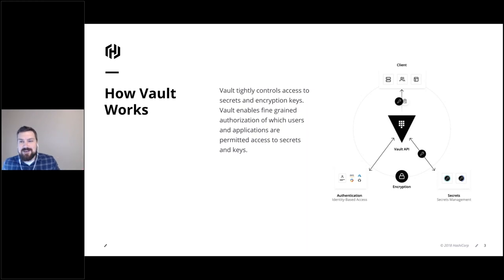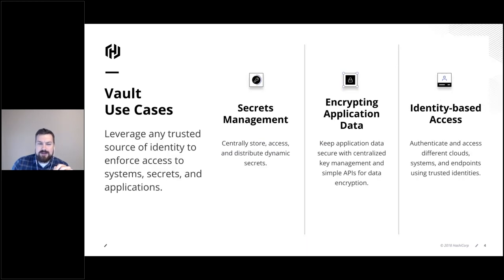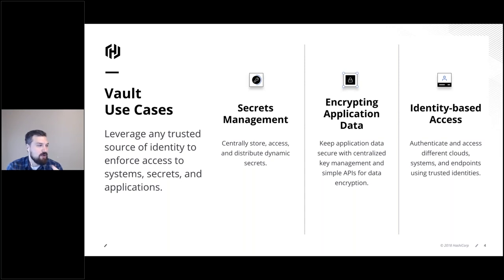Vault is a pretty cool tool that allows you to securely store things like passwords, certificates, API keys, tokens, etc. Vault is a service that sits on your network and answers queries for secret data. As you can see in the diagram, clients chat with Vault for things like authentication, encryption, and secrets — useful for machines wanting automated access to various things Vault knows about. All data is encrypted at rest and in transit, and you can access it via a web UI, the command prompt, or a very complete API.